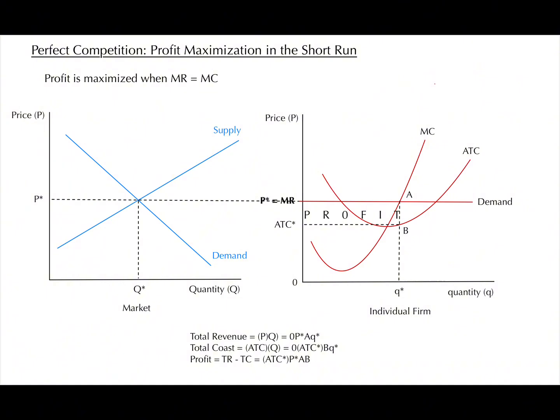Below you can see two graphs. These display perfect competition in the short run. On the left is perfect competition in the short run for a market. In this graph, you can see the supply curve, demand curve, P star, and Q star. Equilibrium is when quantity demanded is equal to quantity supplied, and that is where you can find equilibrium price, P star, and equilibrium quantity, Q star.